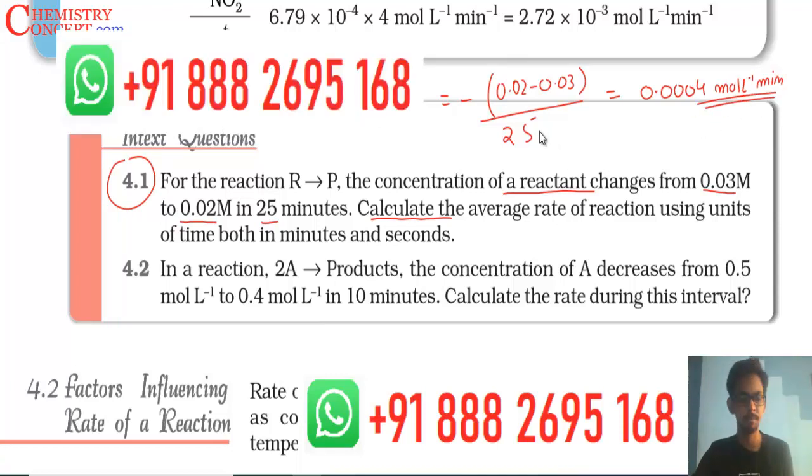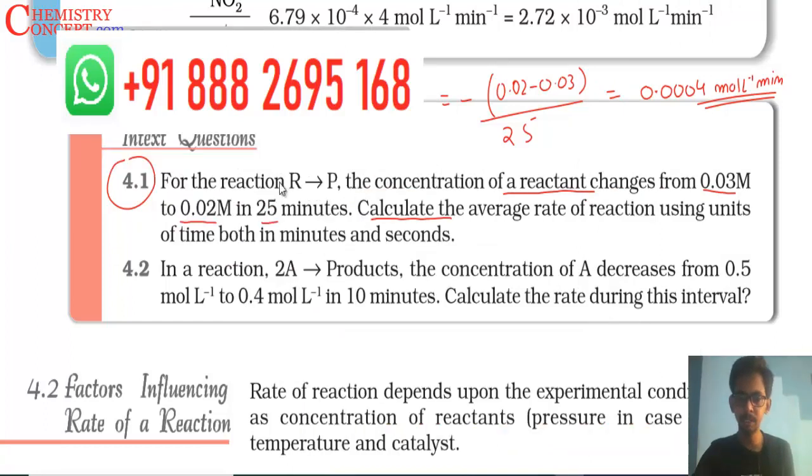If you want it in seconds, divide by 60 to convert to per second. Second part: In a reaction 2A → P, the concentration of A decreases from 0.5 to 0.4 mol/L in 10 minutes. Calculate the rate during this interval. The stoichiometric coefficient is 2, so rate in terms of A will be minus 1/2, because 2 is the stoichiometric coefficient, times change in concentration of A upon change in time. Minus 1/2 times (0.4 - 0.5) divided by 10, which gives 0.005 mol per liter per minute.